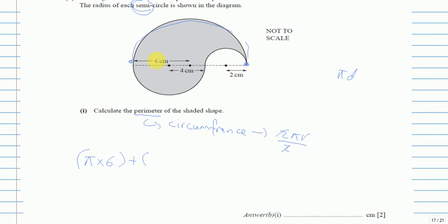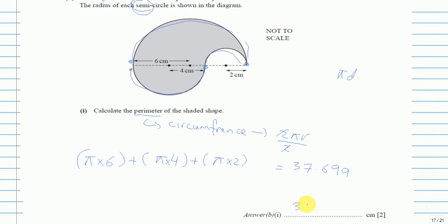The mid-sized semicircle gives π times its radius, which is 4. The smallest one gives π times its radius, which is 2. Adding all three together, the answer is 37.699, and rounding to three significant figures gives 37.7.